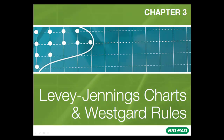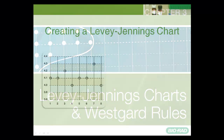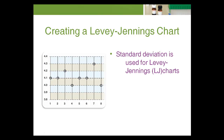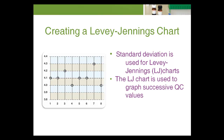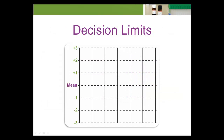Welcome to Chapter 3: Levy-Jennings Charts and Westgard Rules. Standard deviation is commonly used for preparing Levy-Jennings charts. The Levy-Jennings chart is used to graph successive run-to-run or day-to-day quality control values. A chart is created for each test and level of control. The first step is to calculate decision limits. These limits are positive-negative 1sd, positive-negative 2sd, and positive-negative 3sd from the mean.